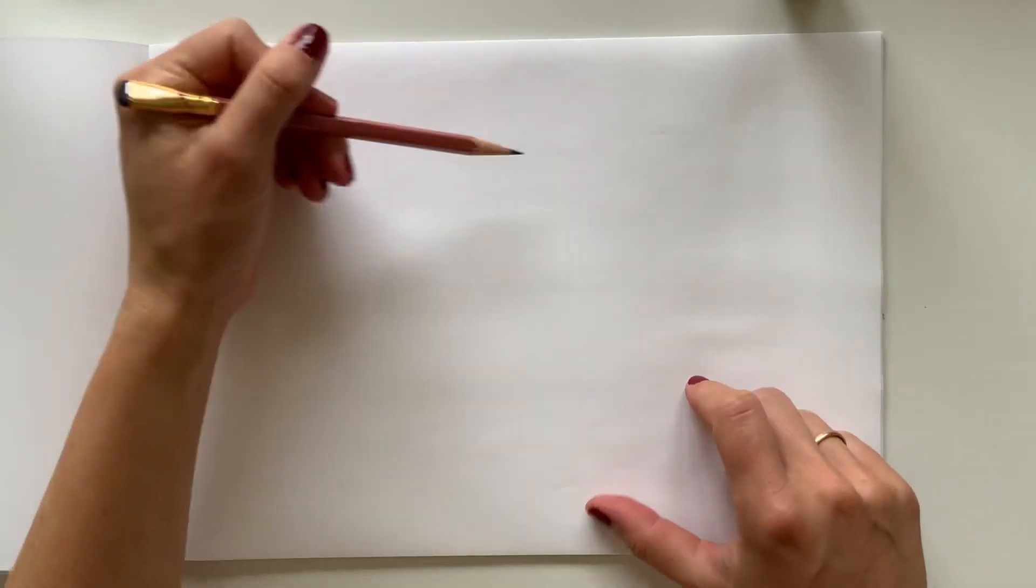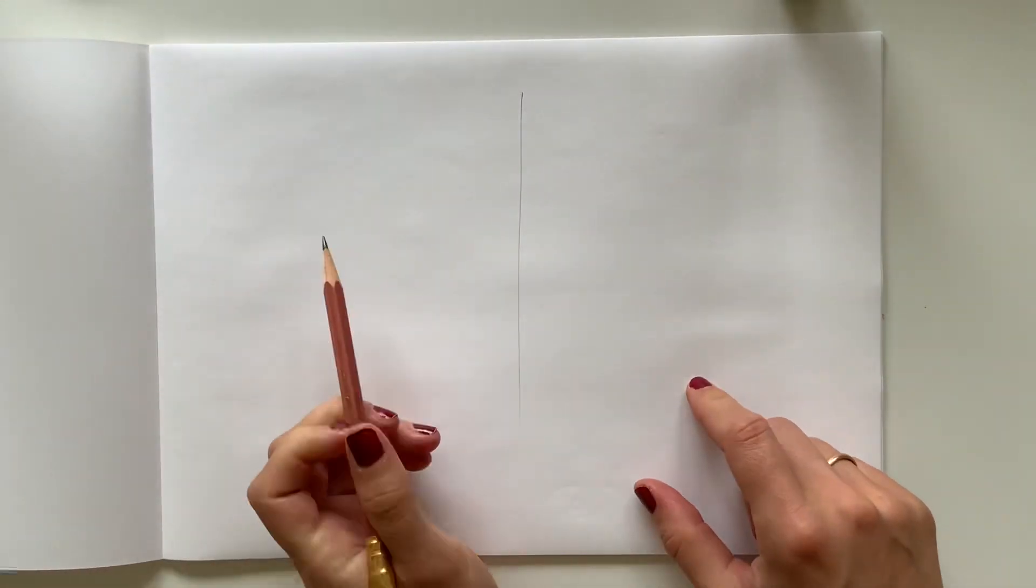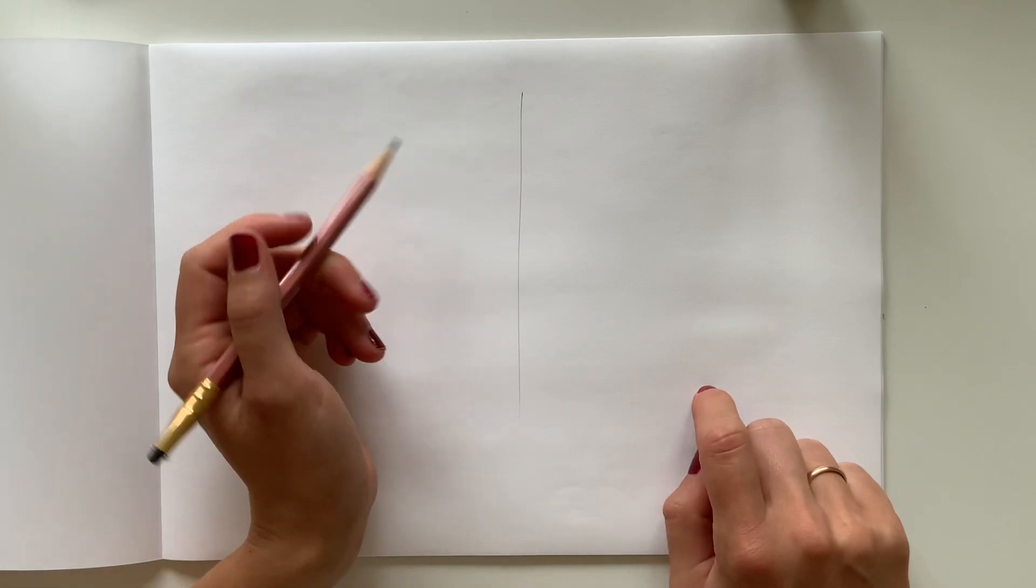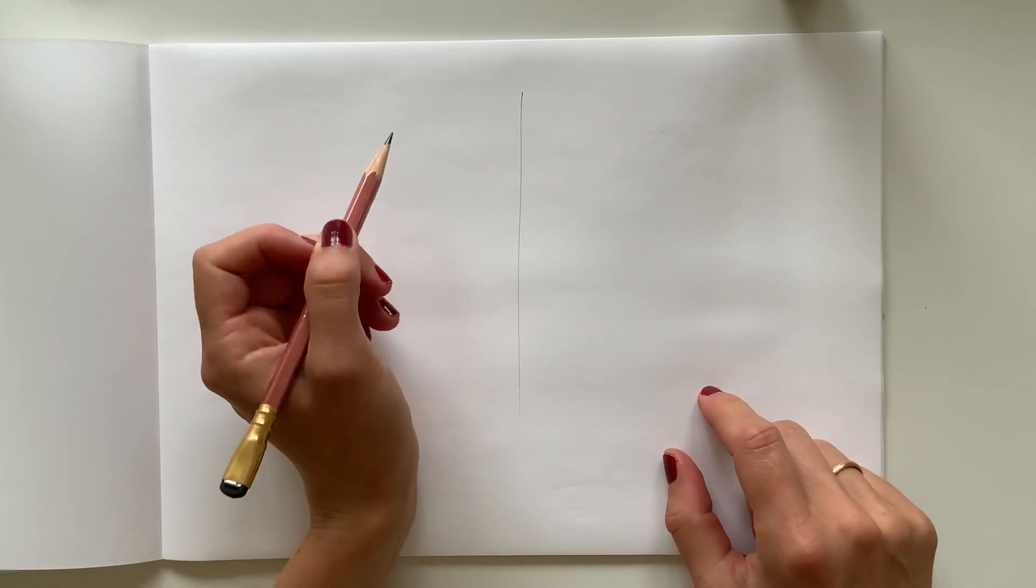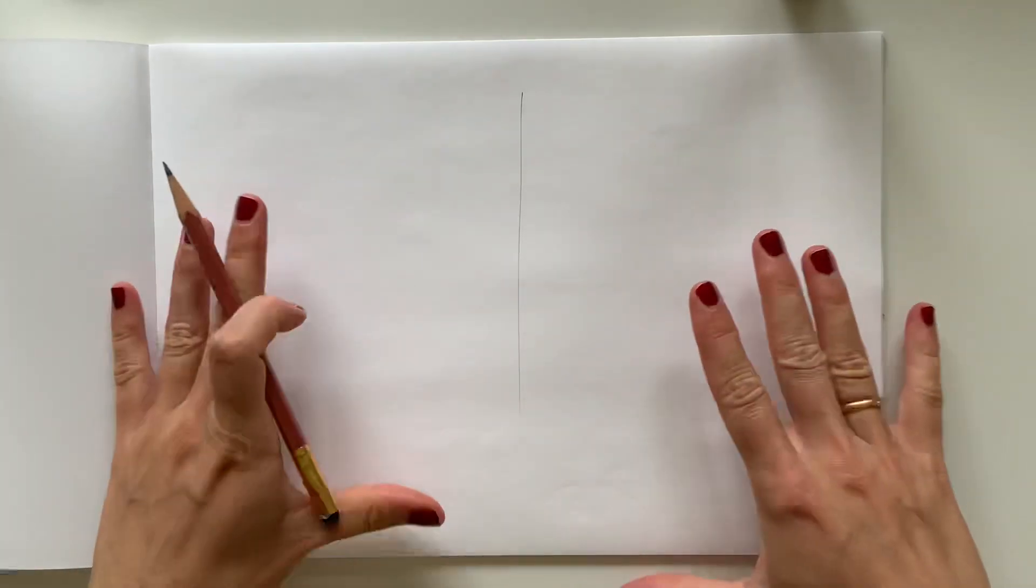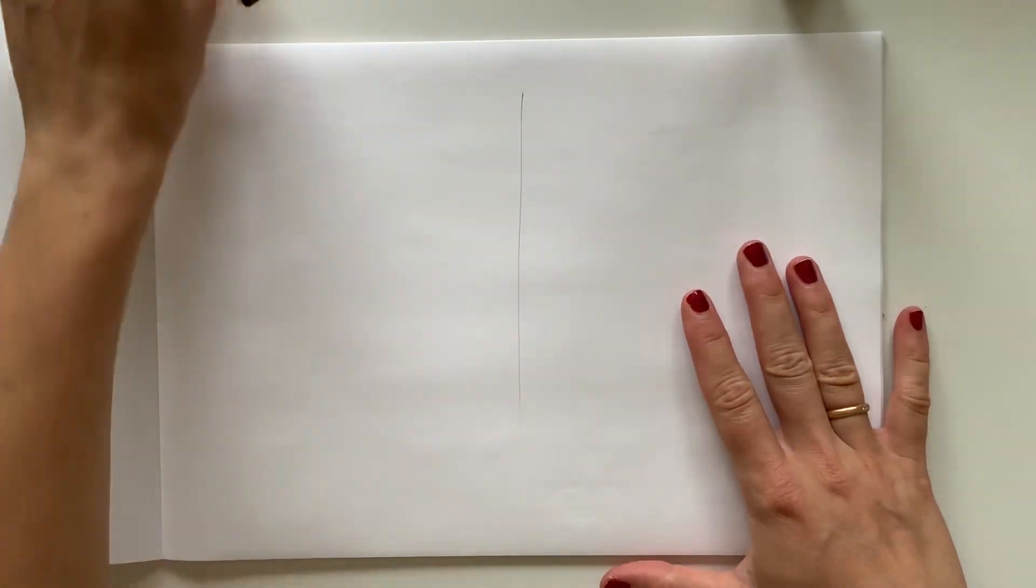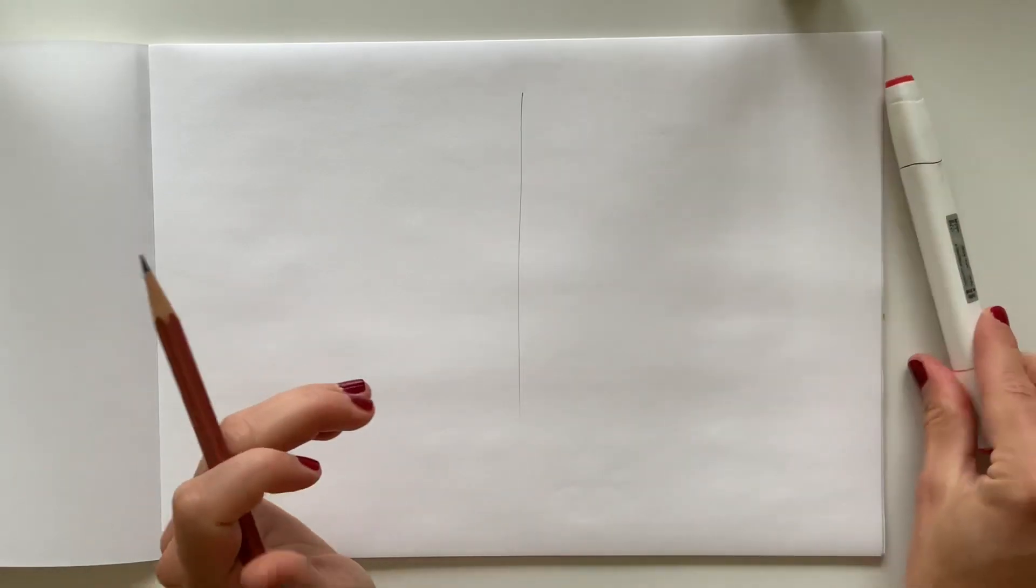As an example for this exercise we will be drawing a Paul Henningsen lamp, an iconic lamp. The very first thing I want you to do is prepare a piece of paper, a pencil, and one marker.